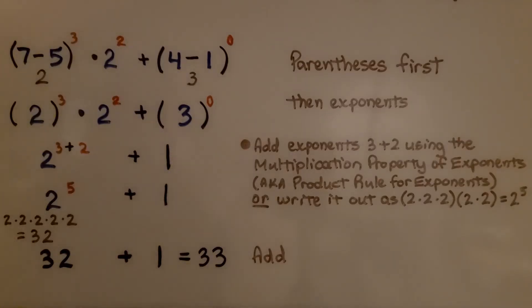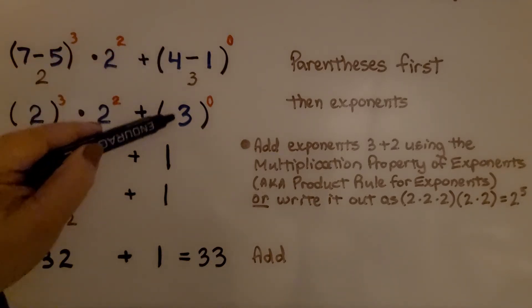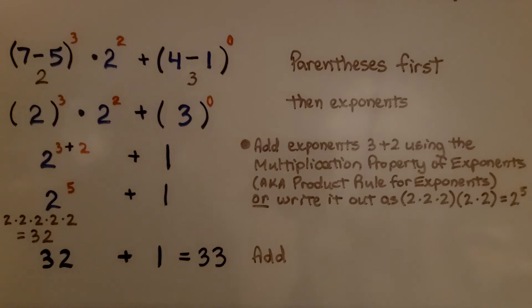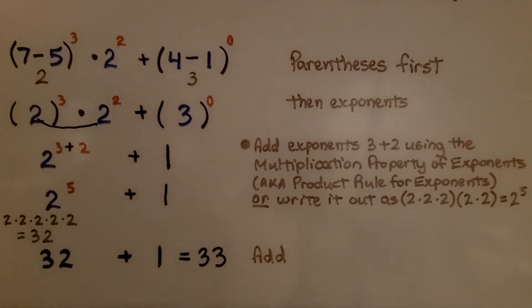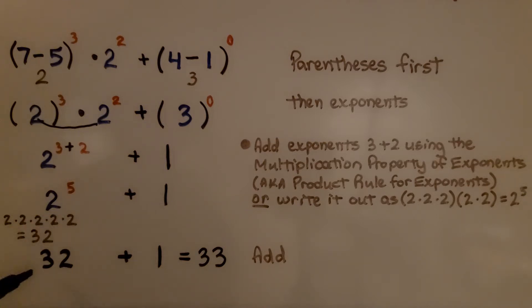Using the order of operations, we do parentheses first, then exponents. 7 minus 5 is 2, so we have 2 to the third power. 4 minus 1 is 3, so we have 3 raised to the zero power. Since these are like bases and we're multiplying them together, we can just add their exponents using the product rule for exponents. Or we can write it out as 2 times 2 times 2 times 2 times 2, which equals 32. We add 32 plus 1 and we have 33.